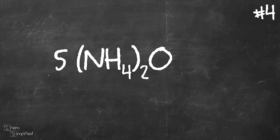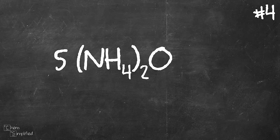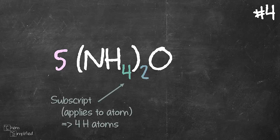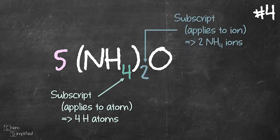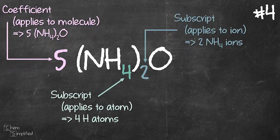Moving on to our final example. Sometimes in an equation, you will encounter a big number in front of a formula like this, 5(NH4)2O. So you need to take that into consideration when you count the atoms as well. We already know what to do with the 4 and the 2 subscripts. That big 5, that's called a coefficient. That number applies to the entire molecule.